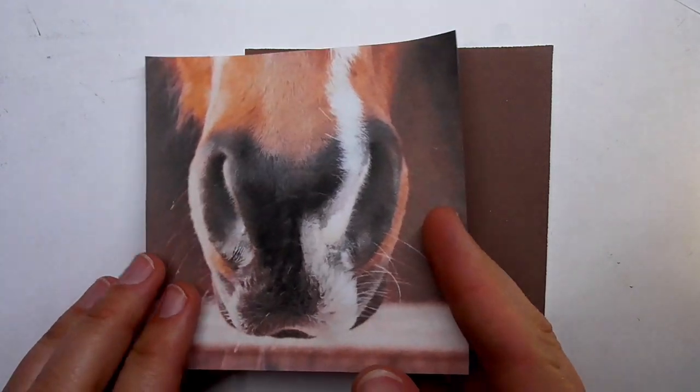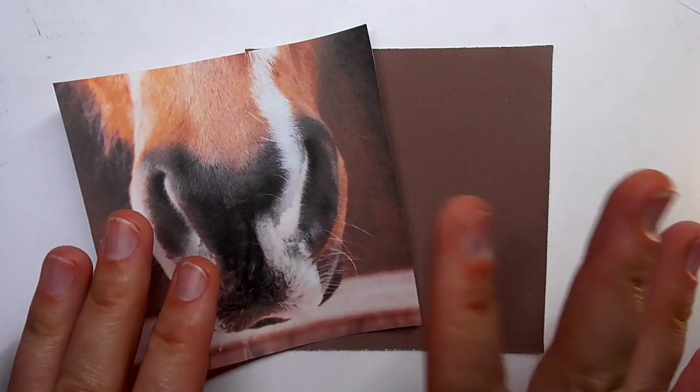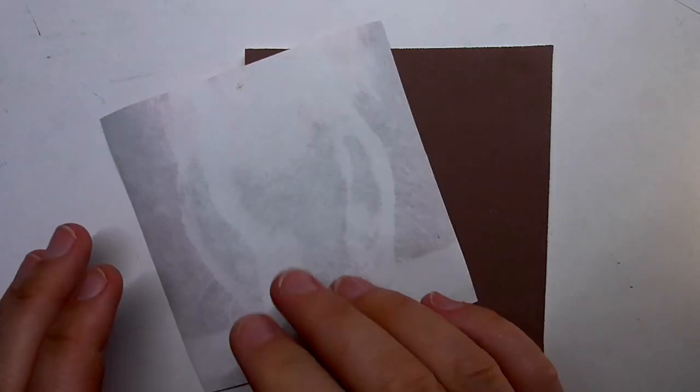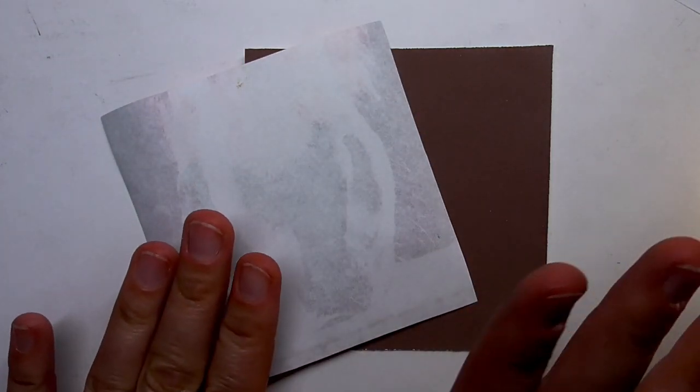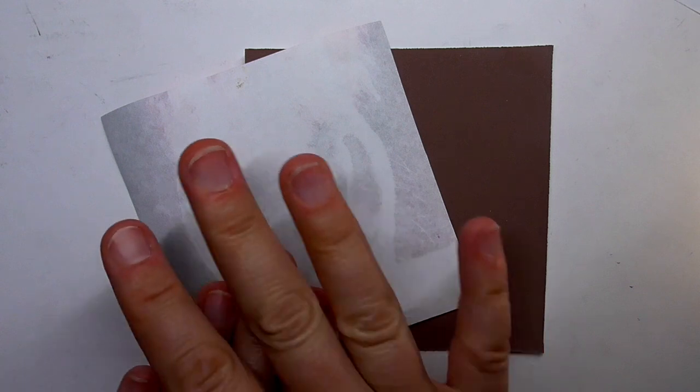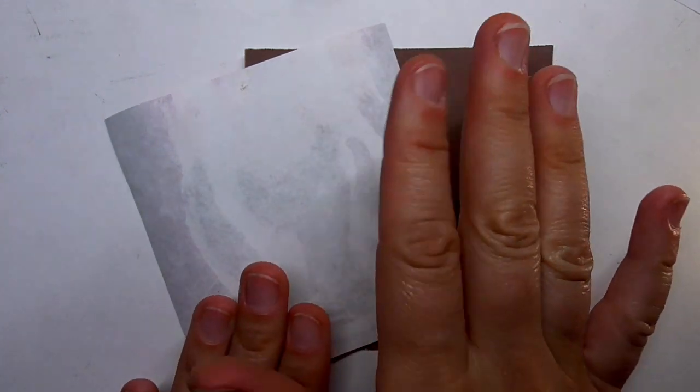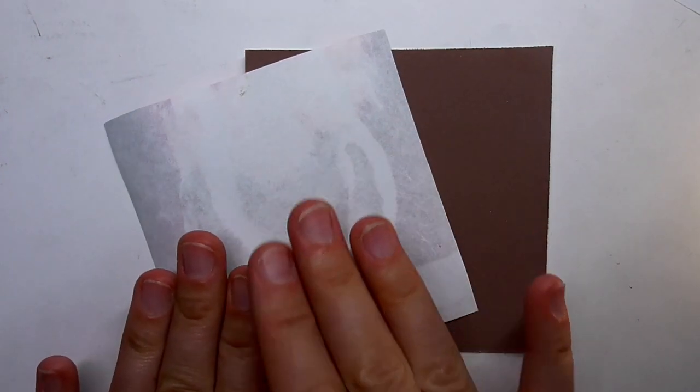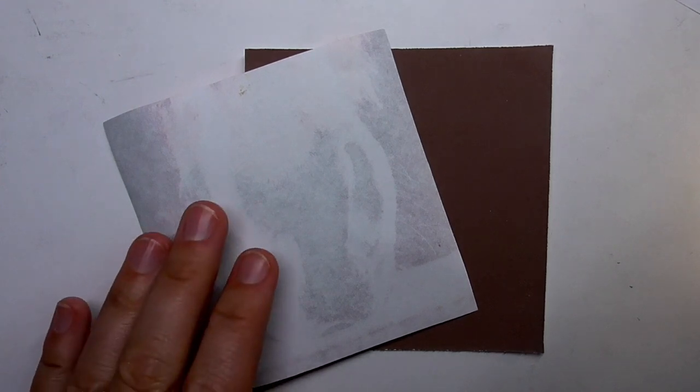So I won't use transfer paper, tracing paper—just put a layer of pastel pigment on the back side of the printed reference photo. So I will show that to you.